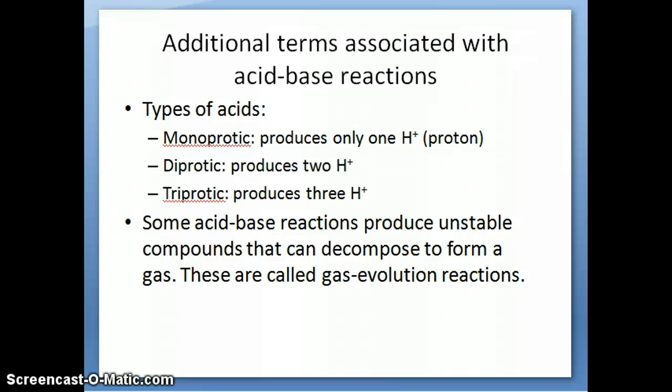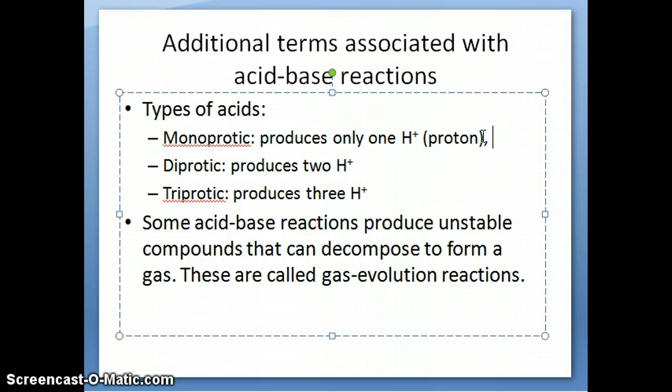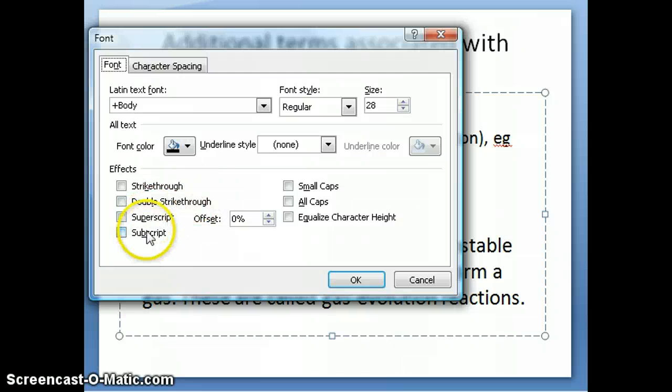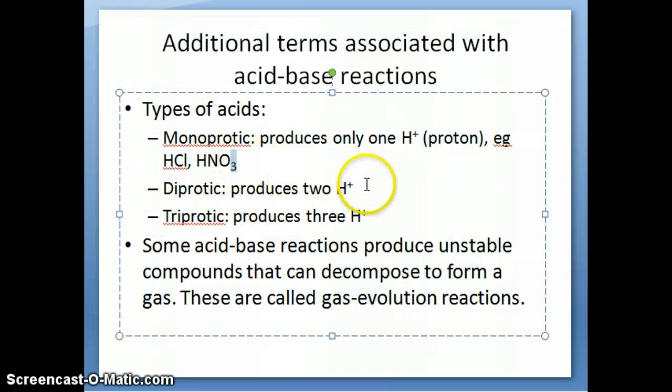So, there's a few additional terms, concepts you need to know about acid-base reaction. First one is just some of the names that we might refer to acids. So, when we say monoprotic acids, we mean that those are acids that produce only one proton. So, things, for example, like HCl, or HNO3, those are acids that produce only one proton when dissociated in water. So, we call them monoprotic acid.